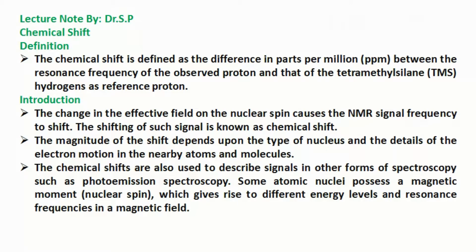The chemical shifts are also used to describe signals in other forms of spectroscopy such as photoemission spectroscopy. Some atomic nuclei possess a magnetic moment or nuclear spin, which gives rise to different energy levels and resonance frequencies in a magnetic field.